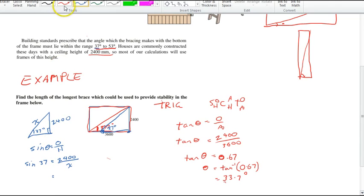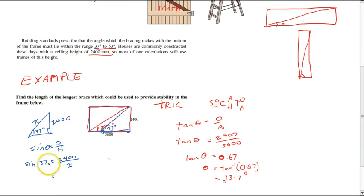Now, just using a different color pen here, you should remember that to figure out what X is here, we swap over the X and the sine 37. We'll end up with X equals 2400 divided by sine 37. You just need to type that into your calculator and you'll get an answer of 3988 millimeters.